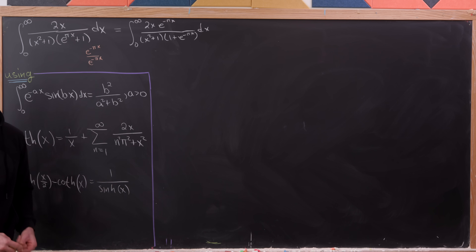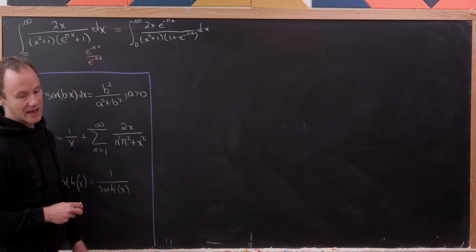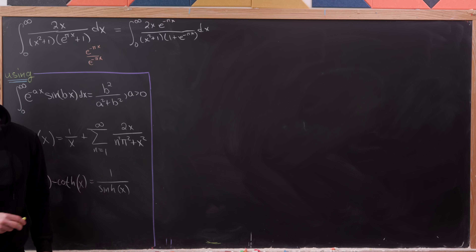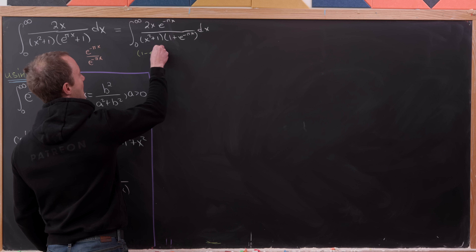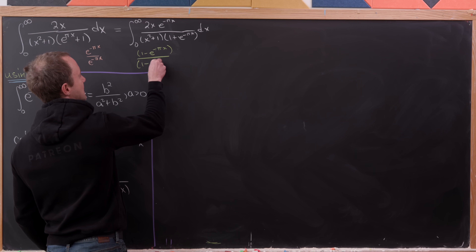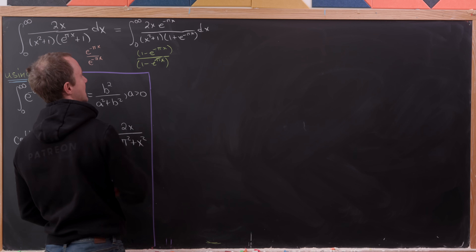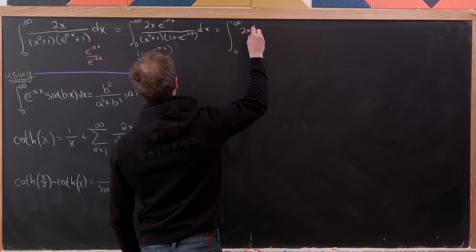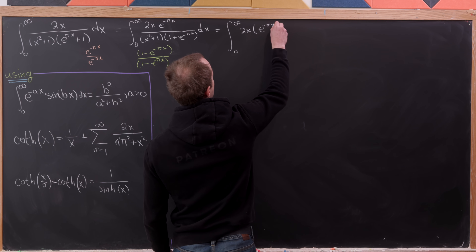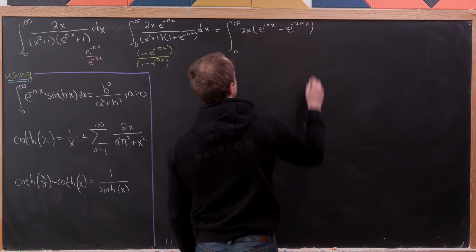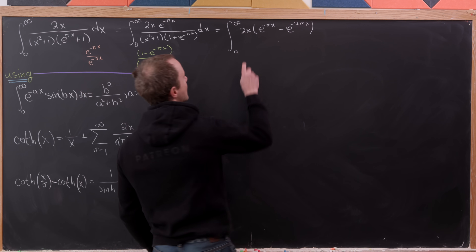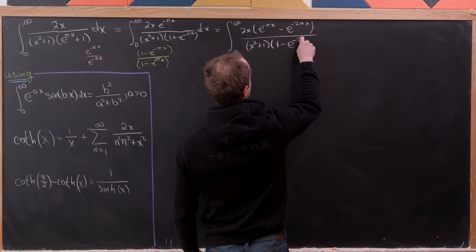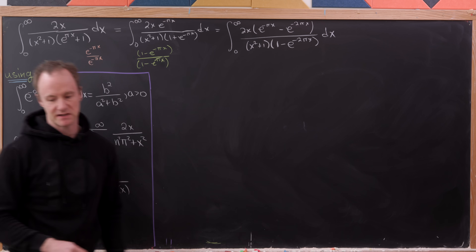Next, we observe we can multiply by (1 − e^{−πx}) over itself and use a difference of squares in the denominator. This gives the integral from 0 to infinity of 2x(e^{−πx} − e^{−2πx}) over (x² + 1)(1 − e^{−2πx}) dx.